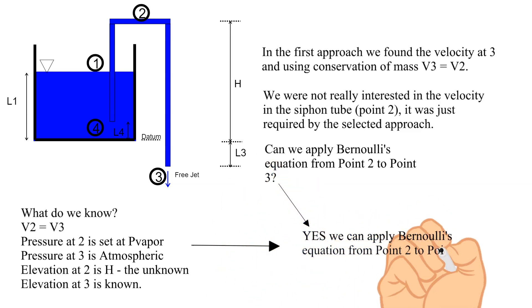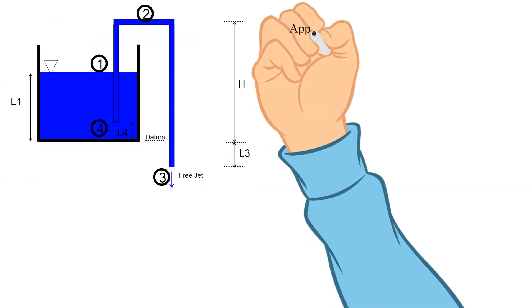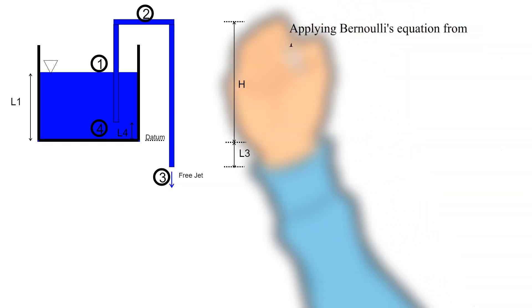So the answer is, yes we can apply Bernoulli's equation from point 2 to point 3. This will be the second approach, which is likely the easier method.